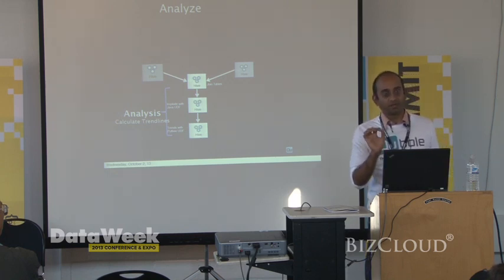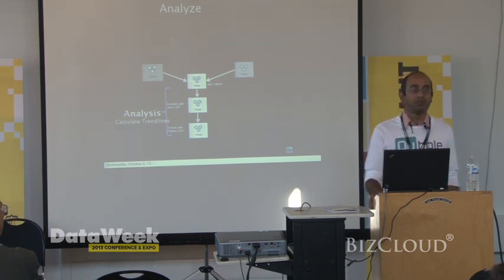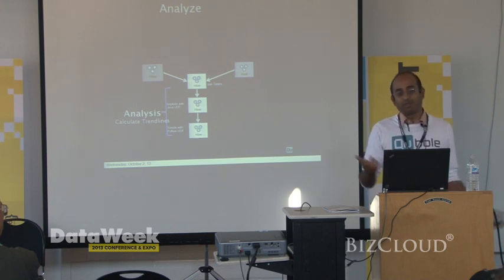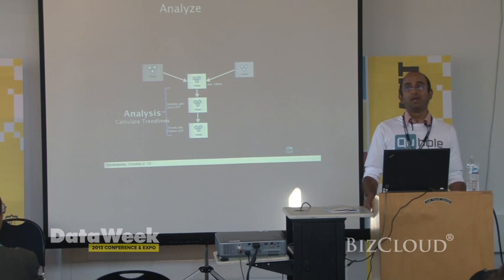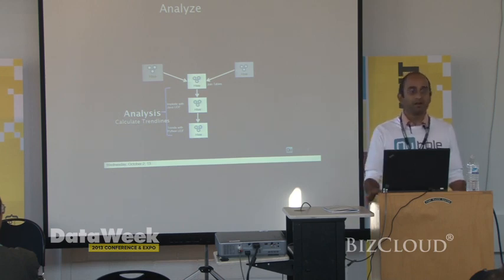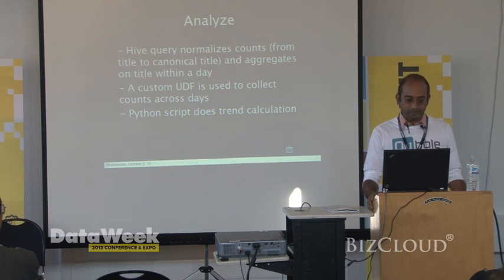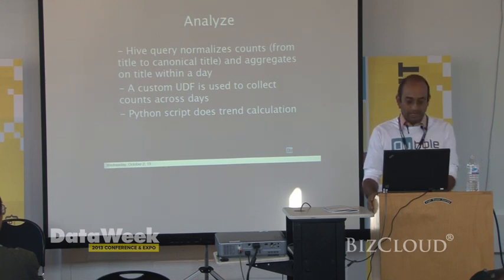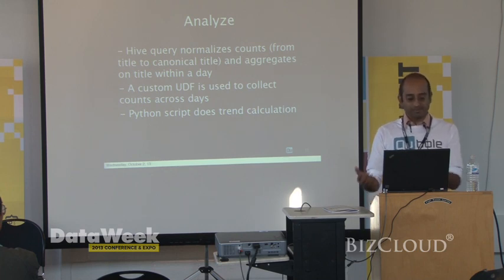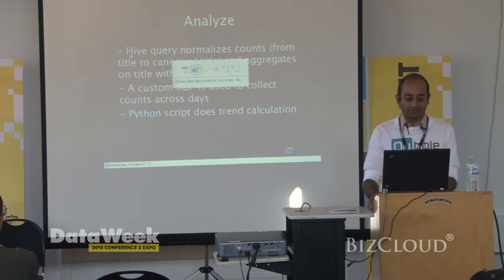We do the actual trend calculation in a Python script, because it was easy to write and we had to do row-over-row calculations. You can take the Python script and embed it in a Hive query. The Hive query normalizes counts, collects the counts across days, and then the Python script does the trend calculation.